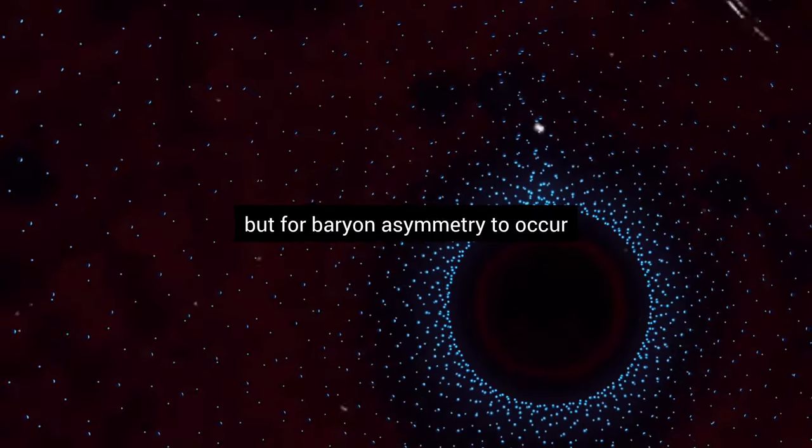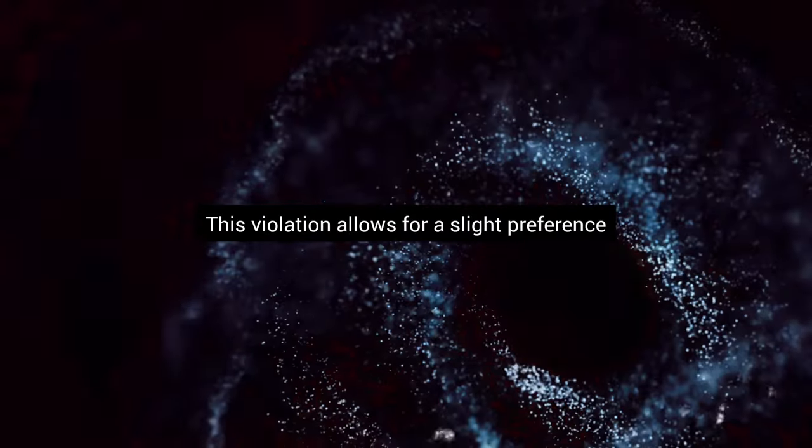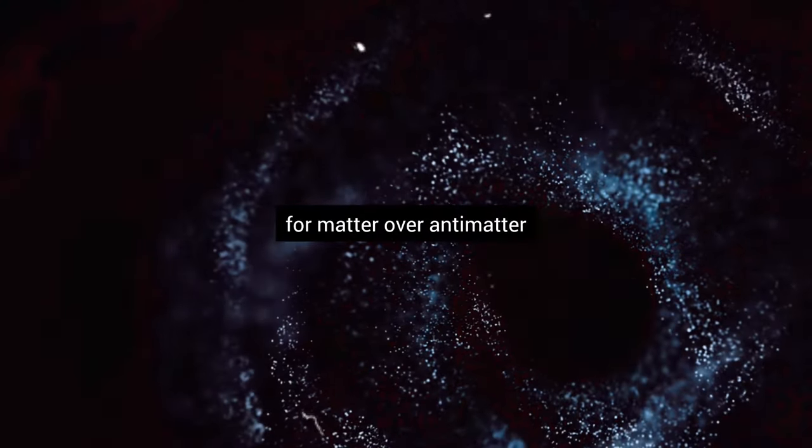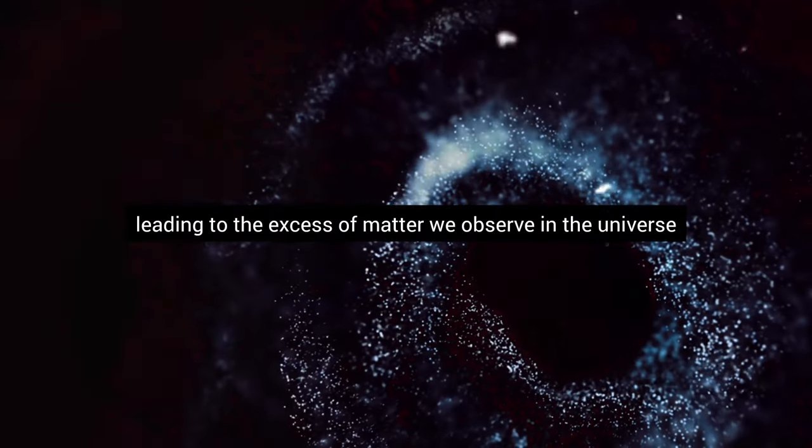But for baryon asymmetry to occur, these symmetries must be violated. This violation allows for a slight preference for matter over antimatter, leading to the excess of matter we observe in the universe.